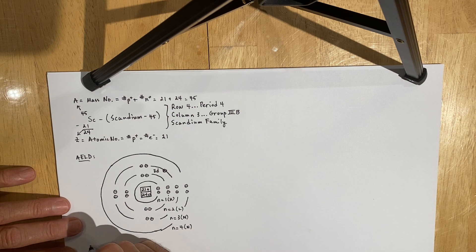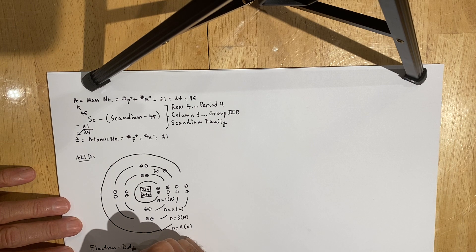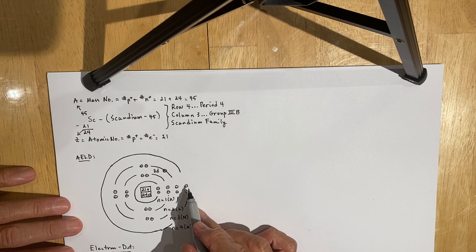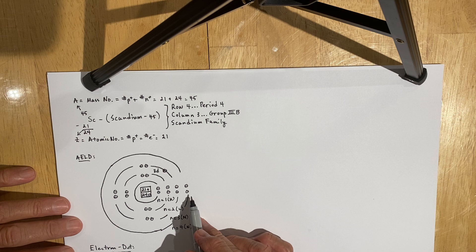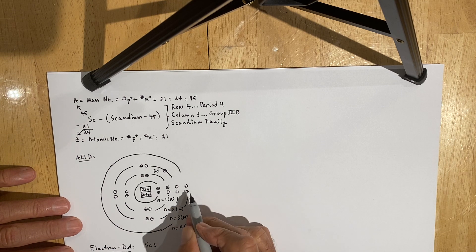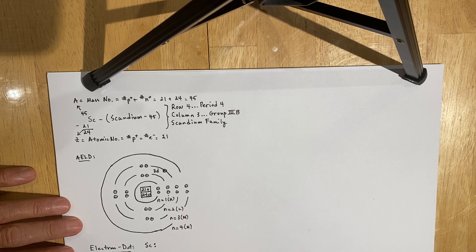If we were going to draw the electron dot formula for scandium, we are representing the valence electrons, which are defined as the electrons in the highest occupied S or P sub-level. Scandium has two electrons in its highest occupied S sub-level, so it has two dots.